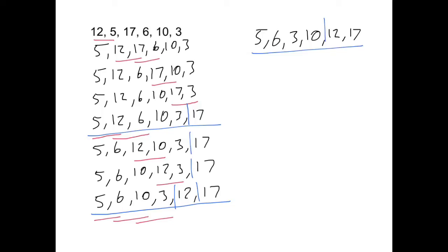So now we won't be considering the 10. And we do 5 and 6. They're okay. 6 and 3, they need to swap. 5, 3, 6, 10, 12, 17. That's the end of that pass.